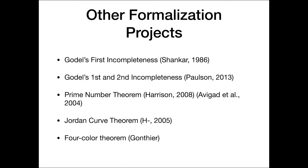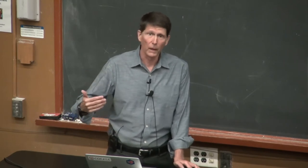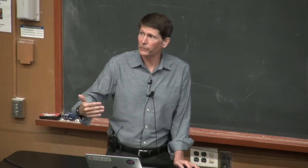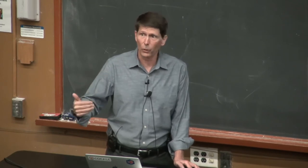My first big project when I started doing formalization was a formal proof of the Jordan curve theorem, I'll say a word more about that. Georges Gonthier's first big project was a formalization of the computer verified proof of the four-color theorem. So when you do a formal proof of a computer proof, what you're actually verifying is that the computer code has no bugs.